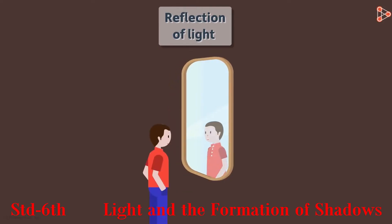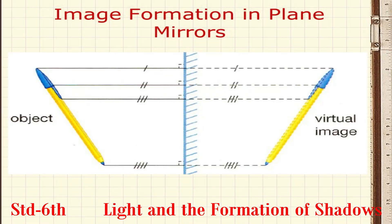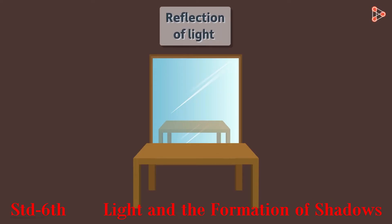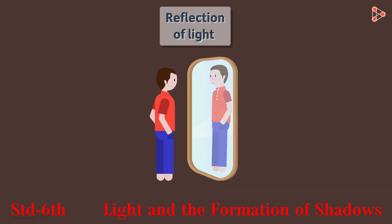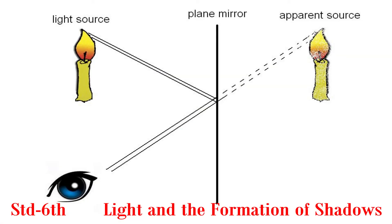Images in a plain mirror: The left and right side of the original object appears to be exchanged in the mirror image. The image is as far behind the mirror as the object is in front of it. The size of the image is the same as that of the object.